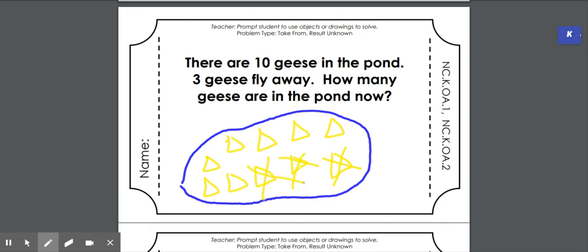How many geese are in the pond now? Now, let's count them. One, two, three, four, five, six, seven. Seven is my answer.